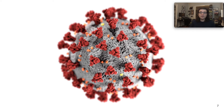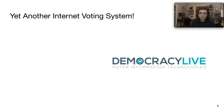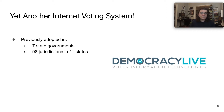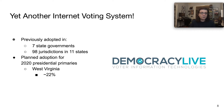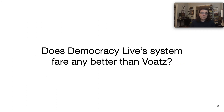Unfortunately, COVID-19 caused states to reconsider, and a number adopted new voting mechanisms. A few actually adopted yet another internet voting system called Democracy Live OmniBallot. The system has seen some adoption already — it was used by seven state governments and 98 jurisdictions in 11 states. The planned adoption for the 2020 presidential primaries included use by 22% of West Virginia's population, which is significantly higher than the margin of error. But Delaware and New Jersey actually planned on using it for the totality of their population. So this leads to a very obvious question: does the Democracy Live system actually fare any better than VOTES?